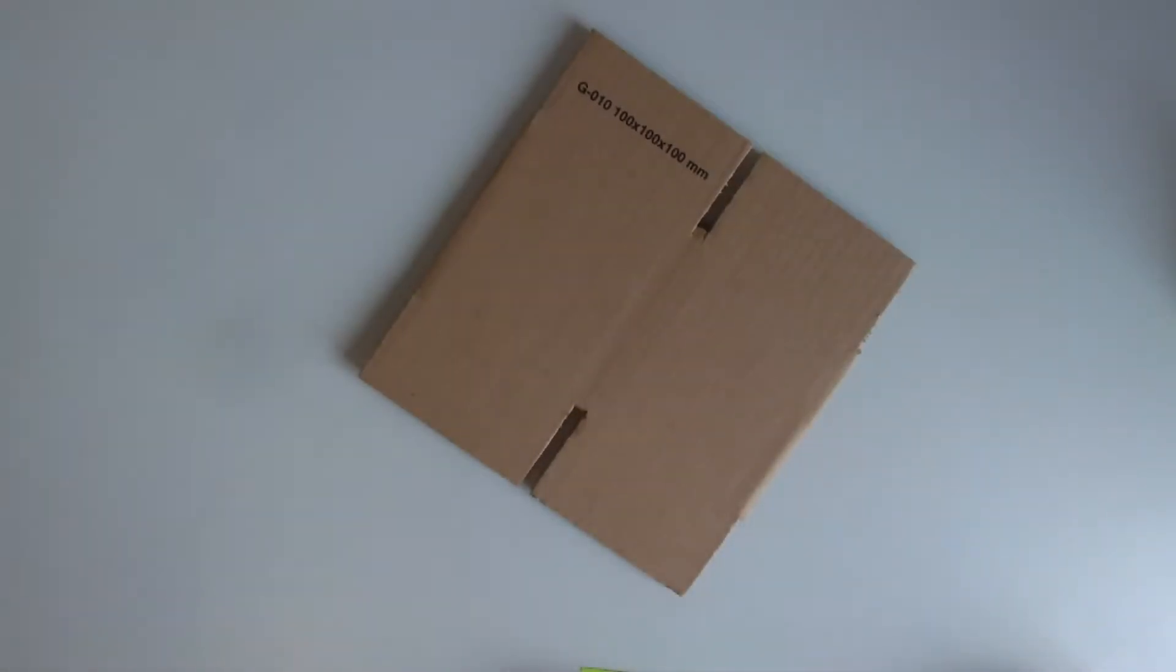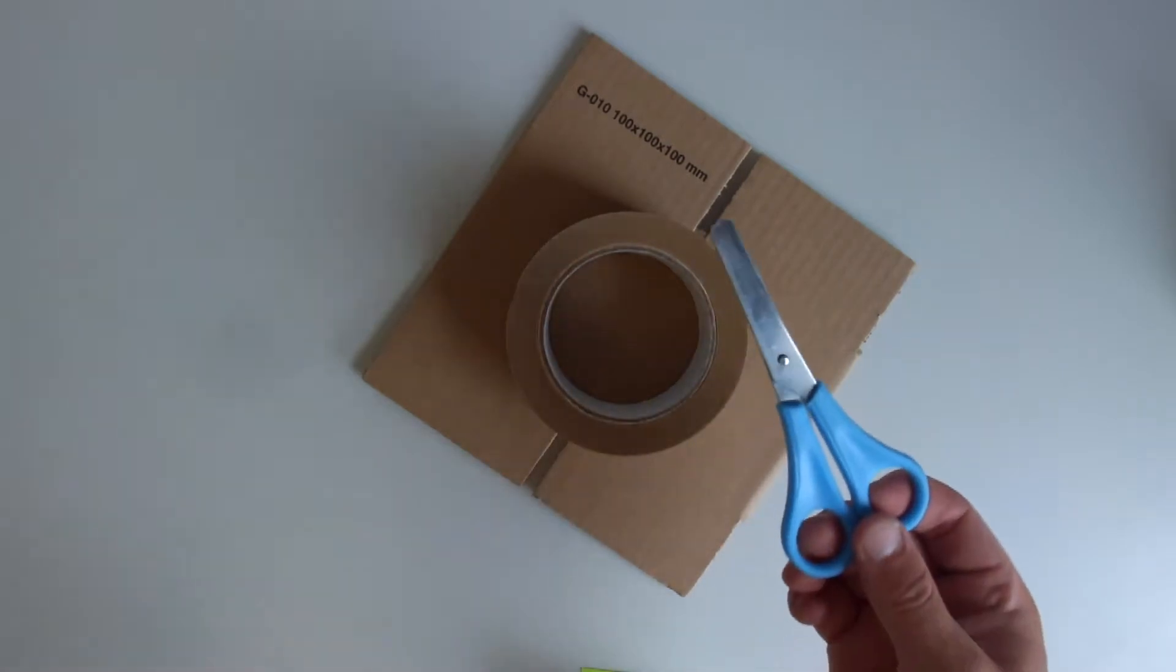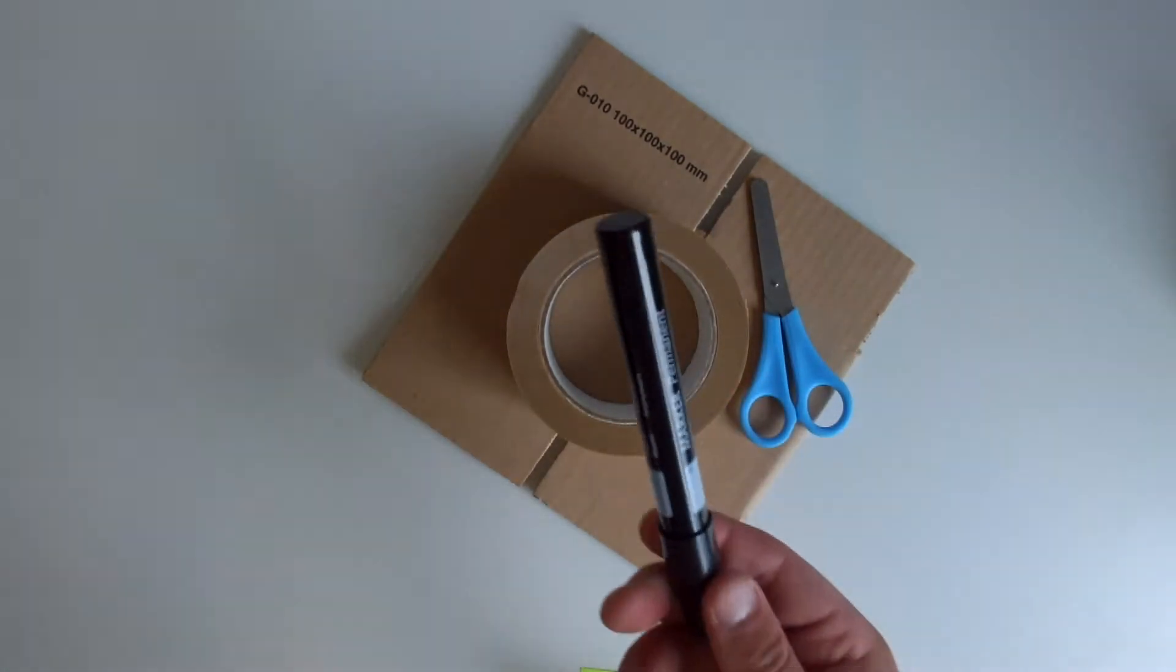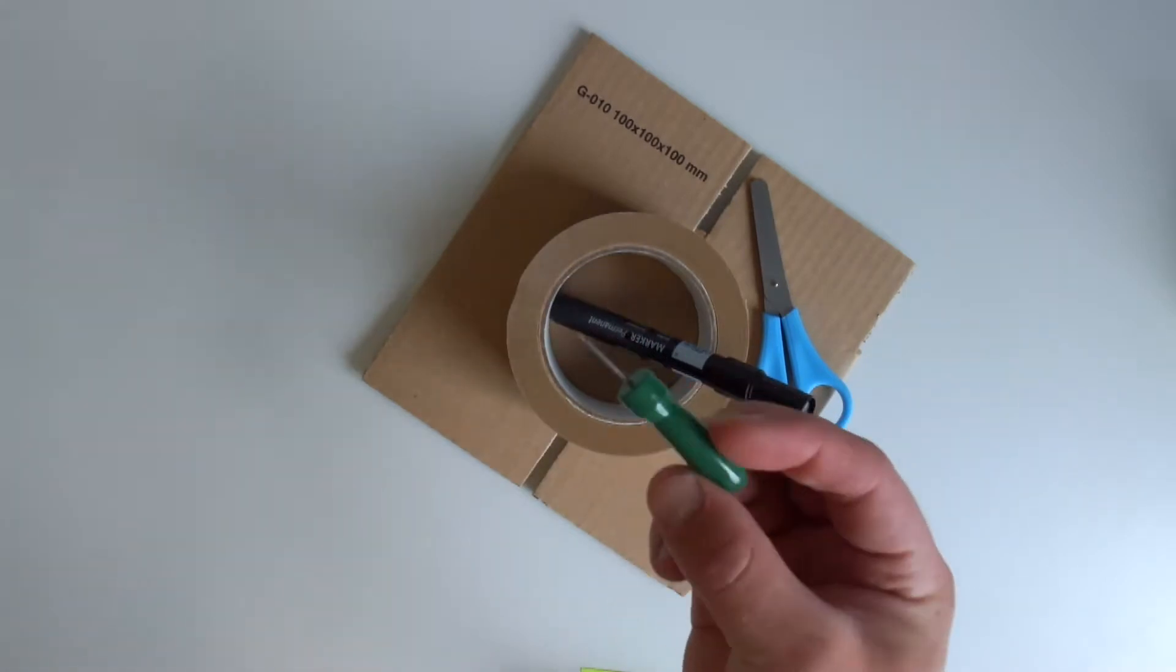But the electronics alone of course is not a robot yet so we're going to use cardboard in this case to build a robot with these electronics. Next to the cardboard you're going to need some tape. It's always handy to have scissors. I'm going to use a marker. And this handy little device, a puncture pen.